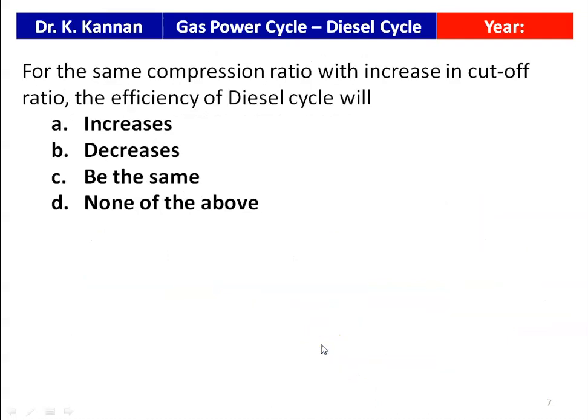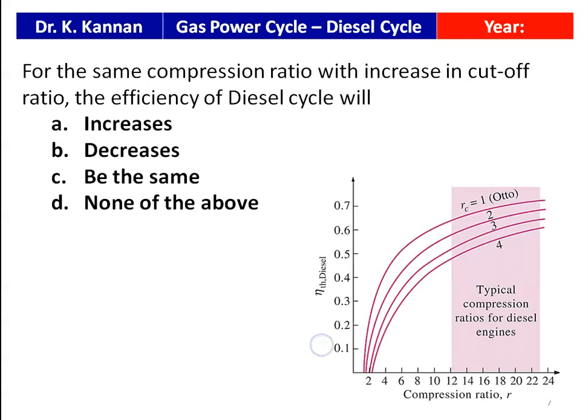The next question: for the same compression ratio with an increase in cutoff ratio, the efficiency of the diesel cycle — options are increases, decreases, remains the same, none of the above. Looking at the plot of efficiency versus compression ratio for different cutoff ratios, when the cutoff ratio increases (Rc = 1, 2, 3, 4), the efficiency decreases. So the answer is: decreases.